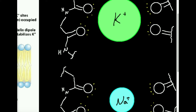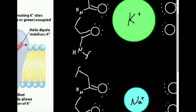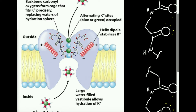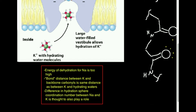What allows for the selectivity for potassium ions and really nothing else? I'm going to answer this question now. We're going to go through this list and then discuss them in detail. Number one, the first reason is that the energy of dehydration for sodium is too high.